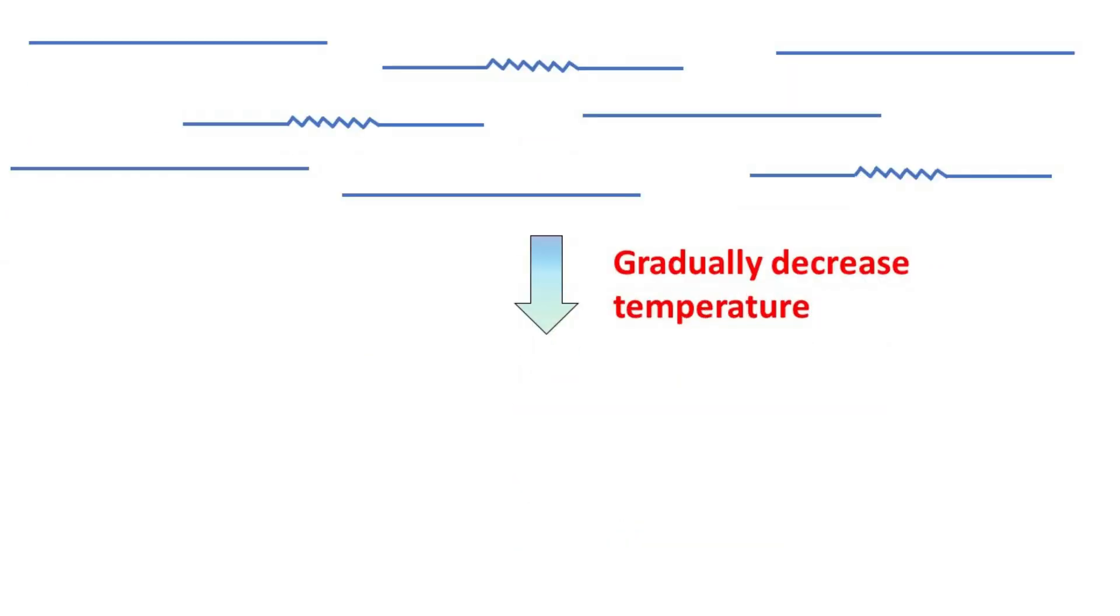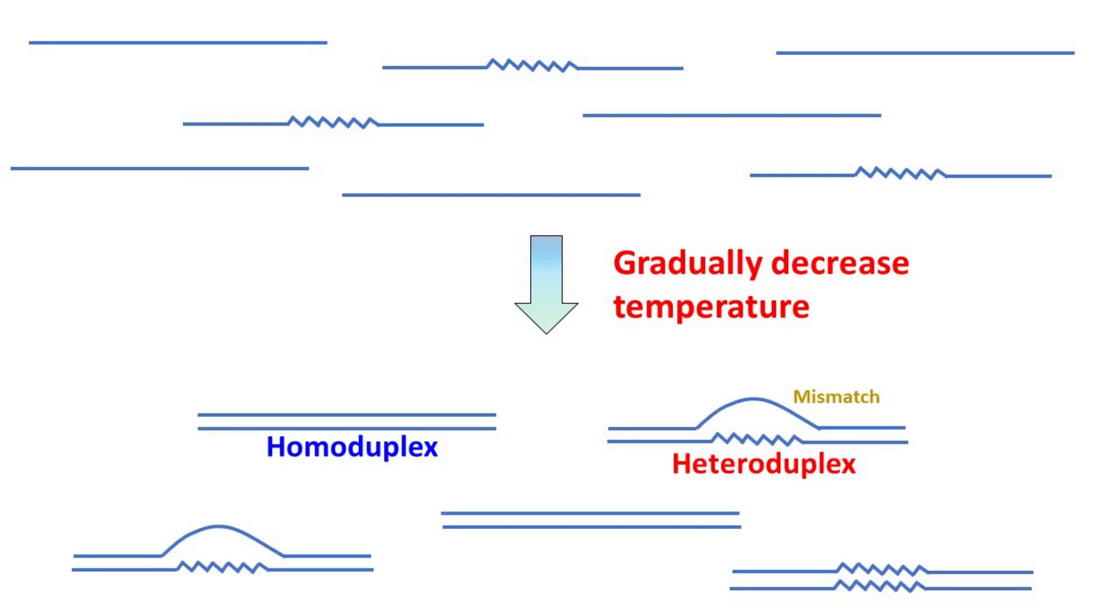Then the temperature is gradually decreased. This allows pairing of DNA strands. As the pairing is a random process, there will be homoduplex as well as heteroduplex in the sample.